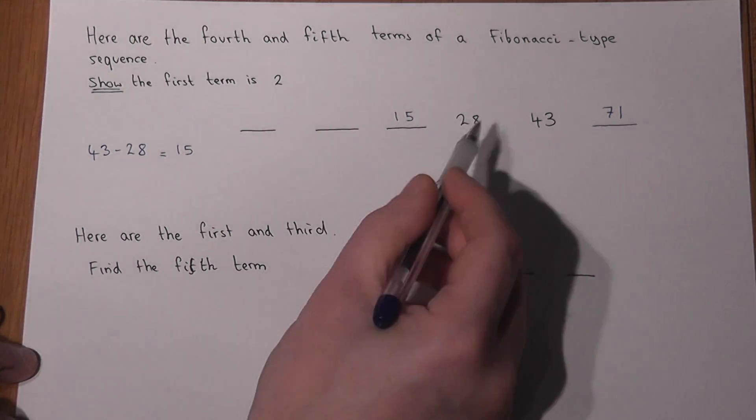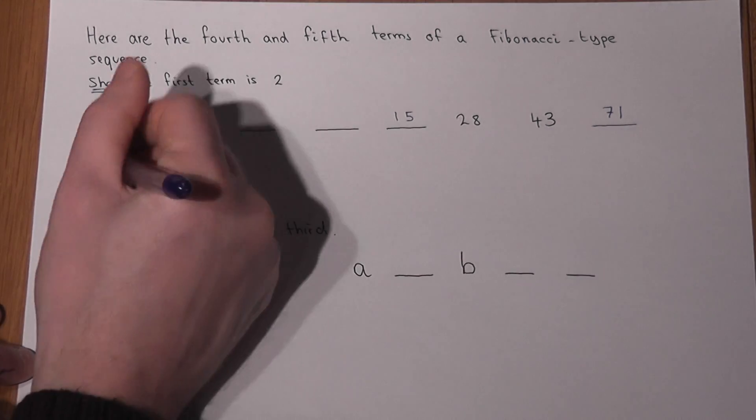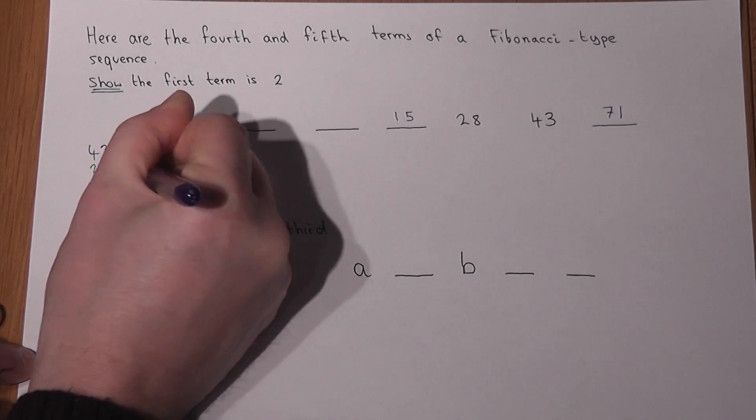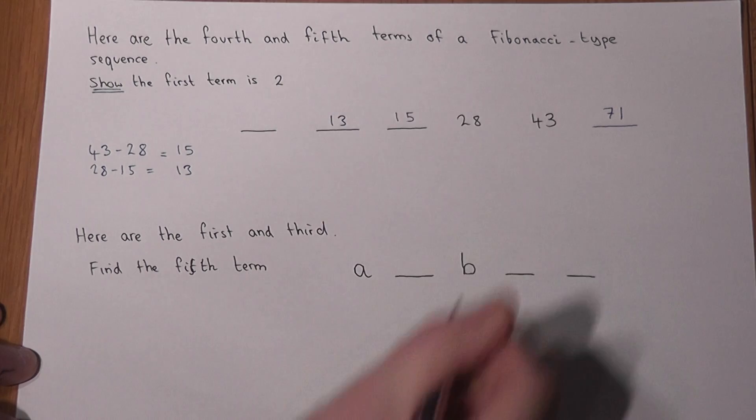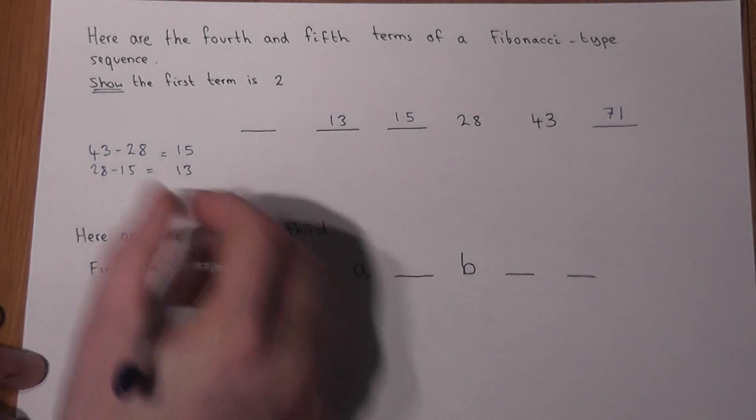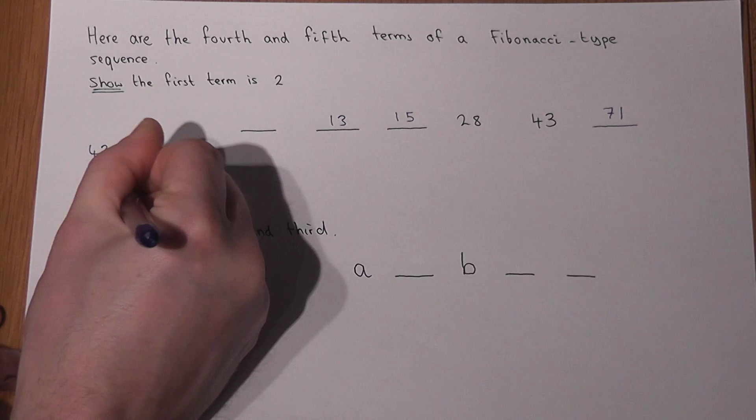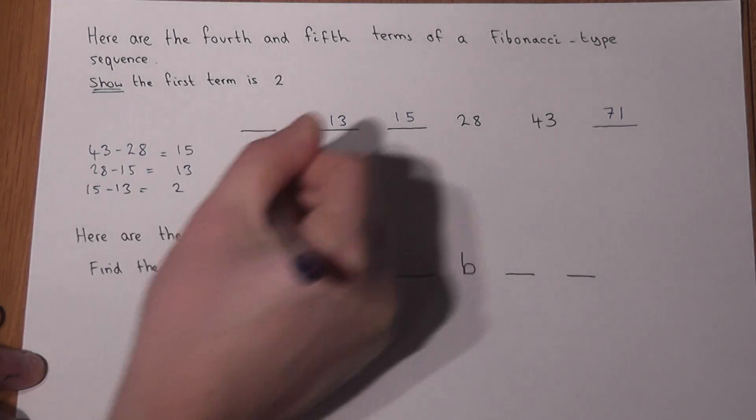So if I keep on going, I'll then do 28 minus 15, which is 13. And then last but not least, to show the first term equals 2, I would do 15 take away 13, equals 2.